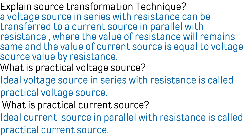Explain source transformation technique. A voltage source in series with resistance can be transferred to a current source in parallel with resistance, where the value of resistance will remain the same and the value of current source is equal to voltage source divided by resistance.